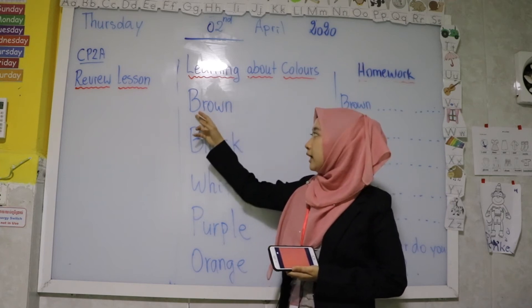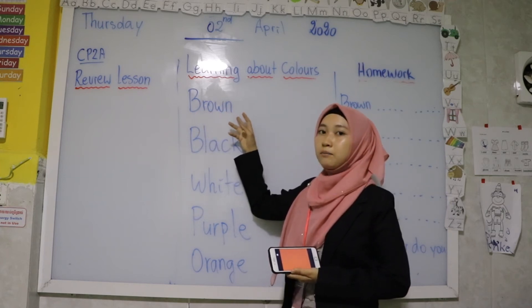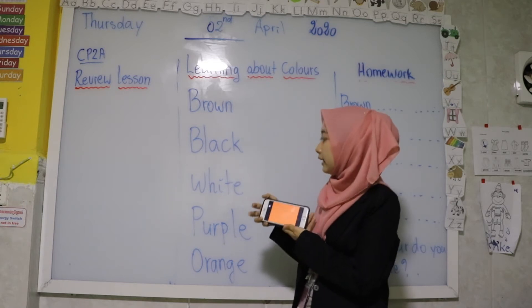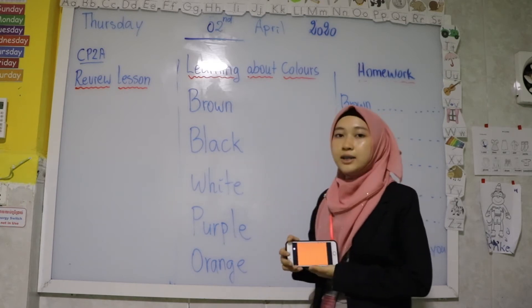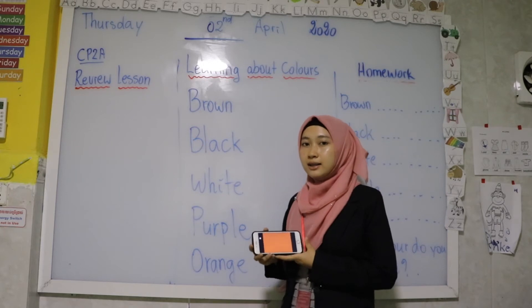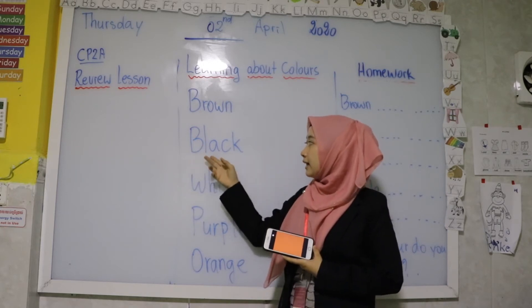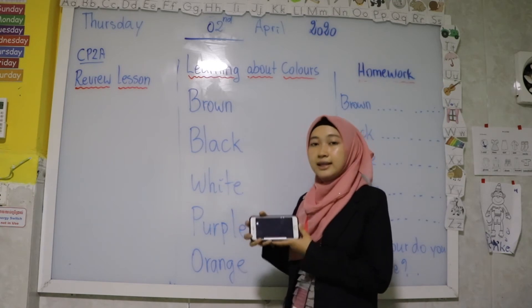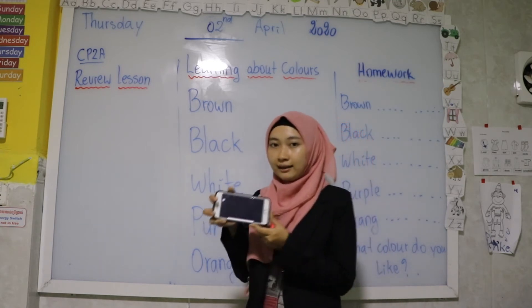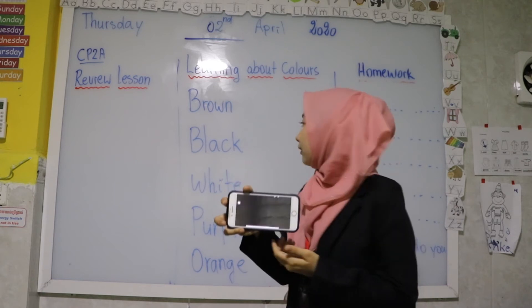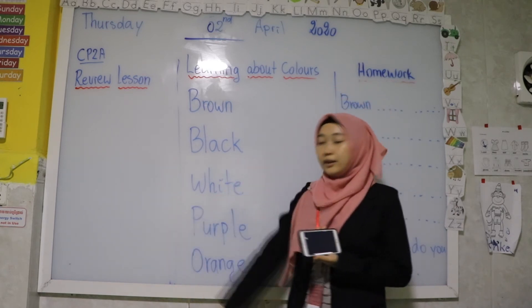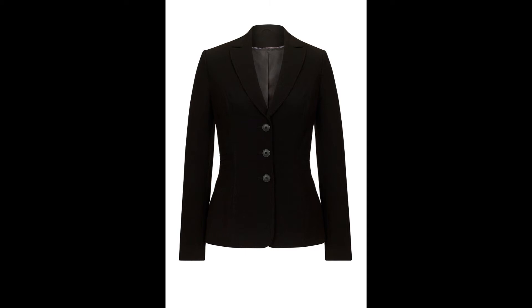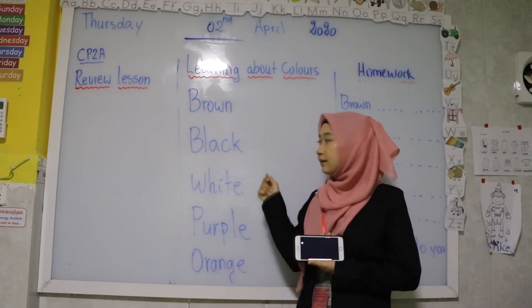Again, brown — B-L-O-W-N. Let's see the color brown. And the next word is black. Black is spelled B-L-A-C-K. My jacket is black. So this is black color. Remember, this is black color.